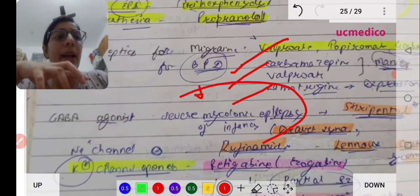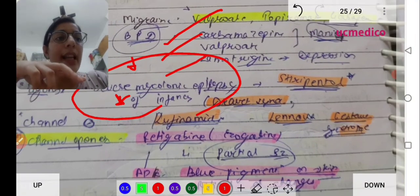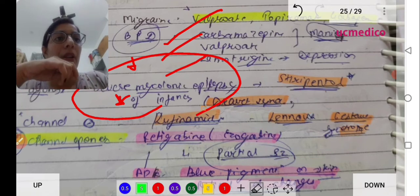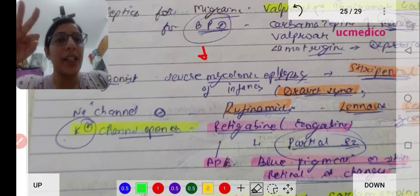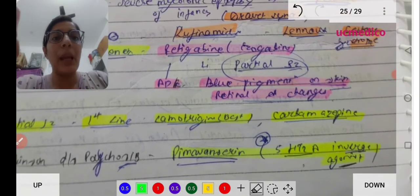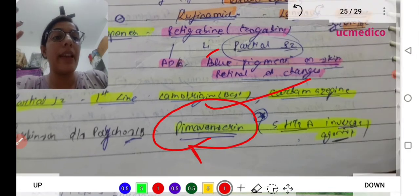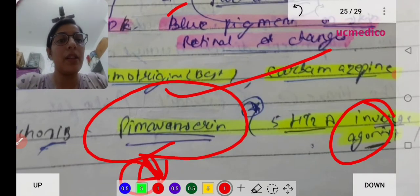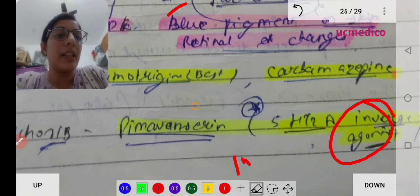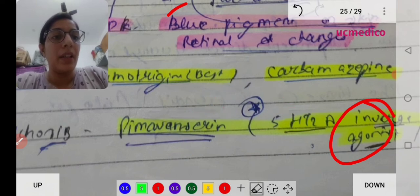GABA agonist for severe myoclonic epilepsy of infancy, that is stiripentol, also known as Dravet syndrome. Sodium channel blocker rufinamide for Lennox-Gastaut syndrome. The question is already asked about Lennox-Gastaut syndrome indirectly about topiramate. Potassium channel opener retigabine. For partial seizure, first-line drug is lamotrigine and lacosamide.